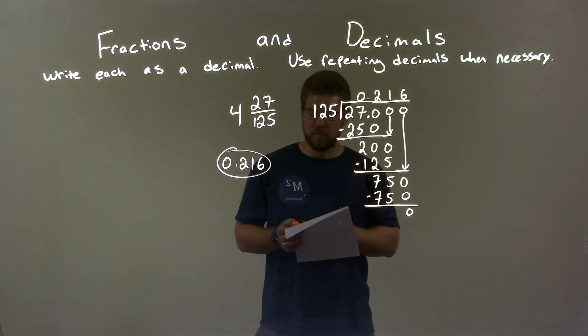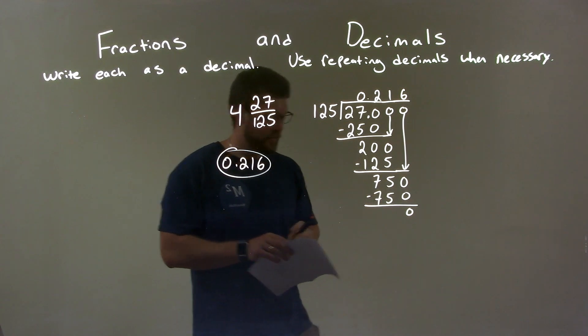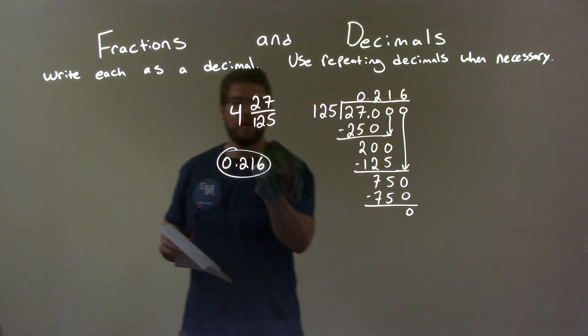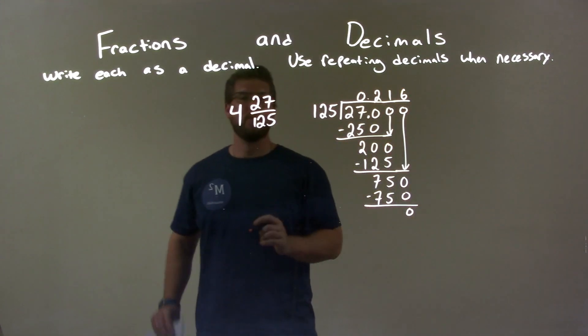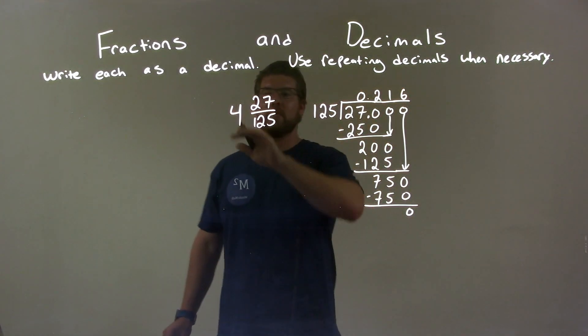So, quick recap. Oh, oh, I almost made a mistake right there, got ahead of myself. 0.216 is the decimal part of 27 over 125, but we don't forget the 4.